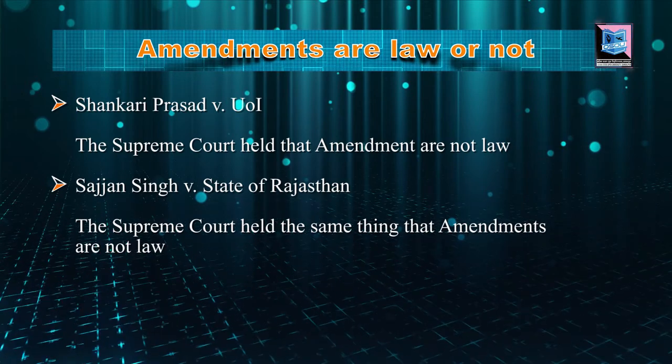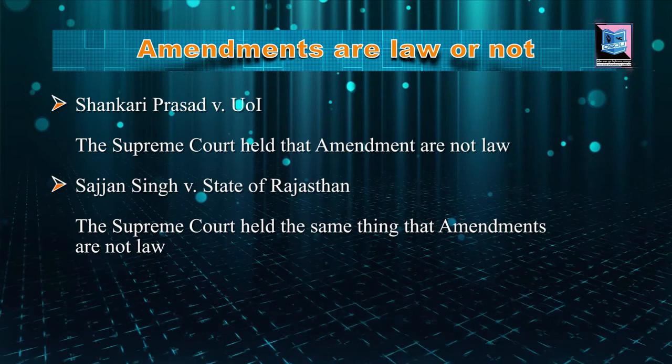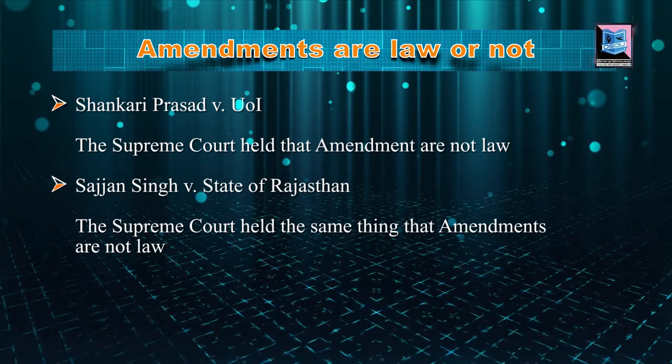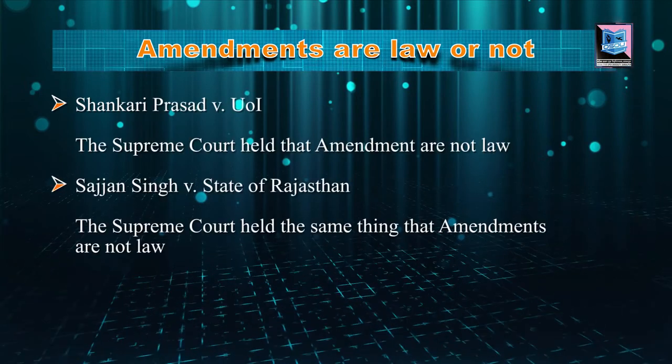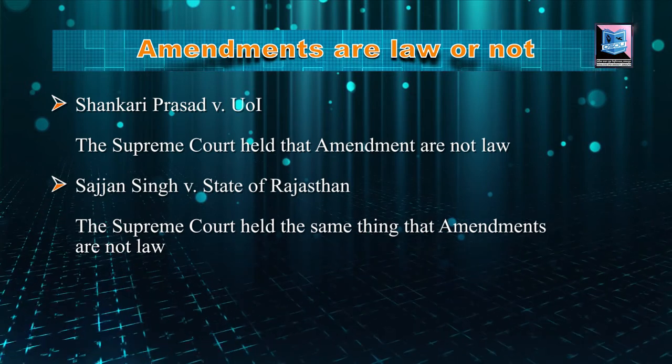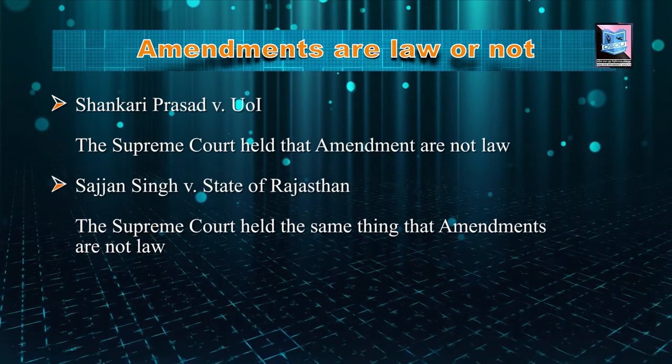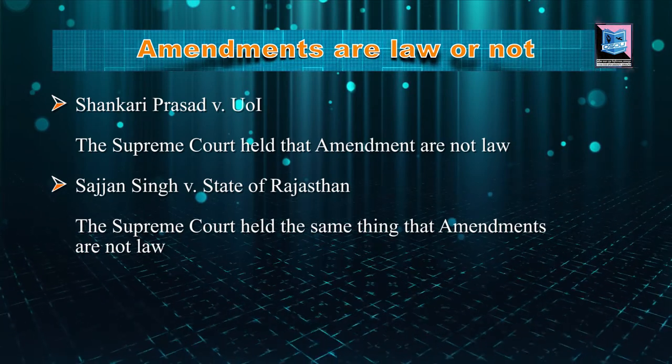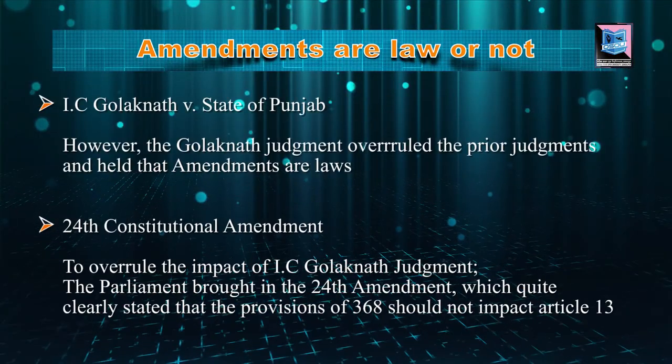In Shankariprasad, the court said amendments are not law. The reason being: if you regard amendments as a law, Parliament cannot make any kind of law going against the fundamental right, which would make the Constitution static in nature. We need a dynamic Constitution, so you cannot stop Parliament from making amendments. The next case was Sajjan Singh versus State of Rajasthan, 1965, which held the same thing — amendments are not law. However, a concurring opinion by Justice Mudalkar asked: if you give absolute power to amend to Parliament, what if they amend the Constitution and say India is a dictatorial state and not a democratic state? Under paragraph 57 of his judgment, Justice Mudalkar said there are certain basic essential features of the Indian Constitution which cannot be taken away.